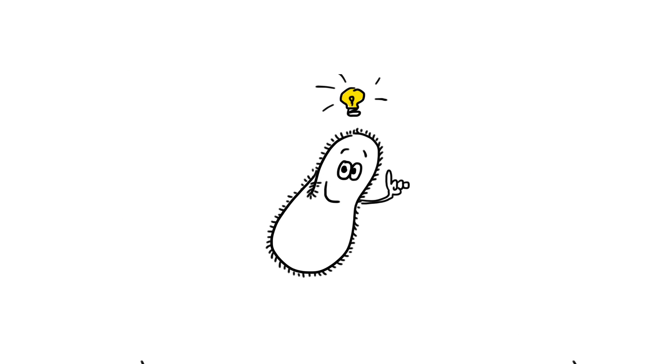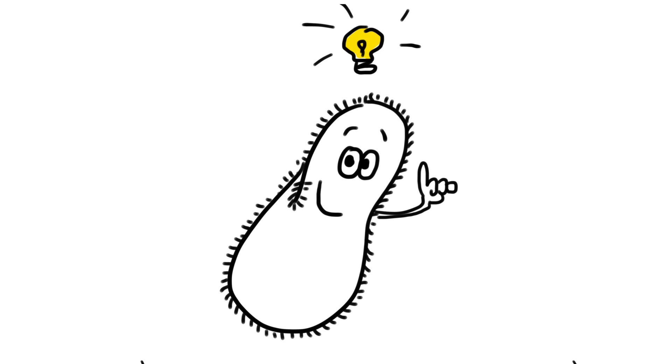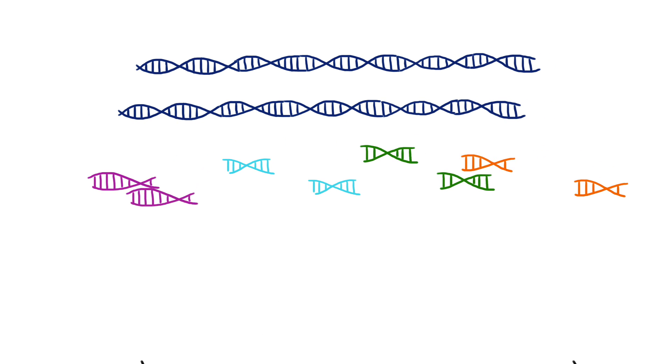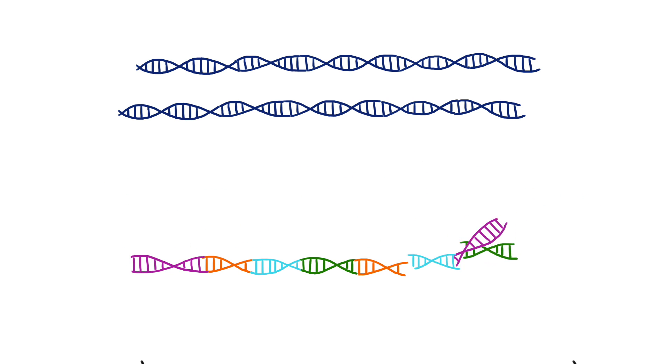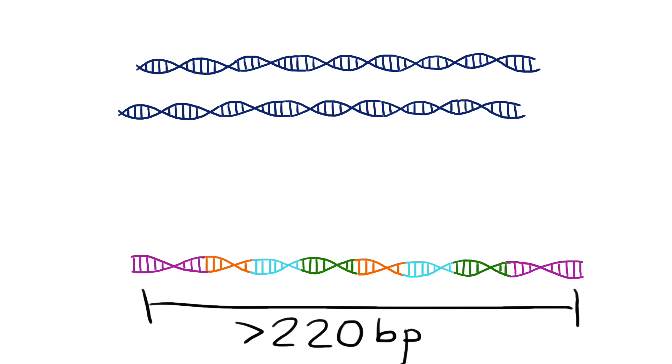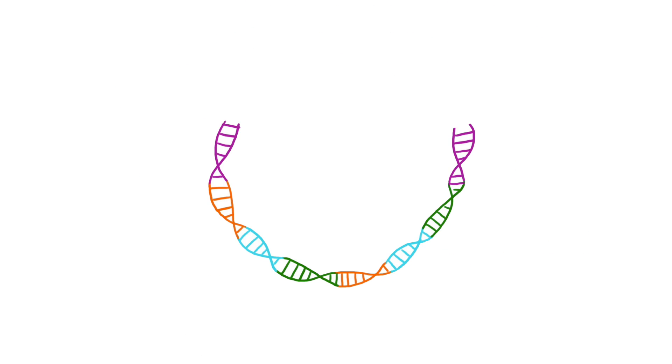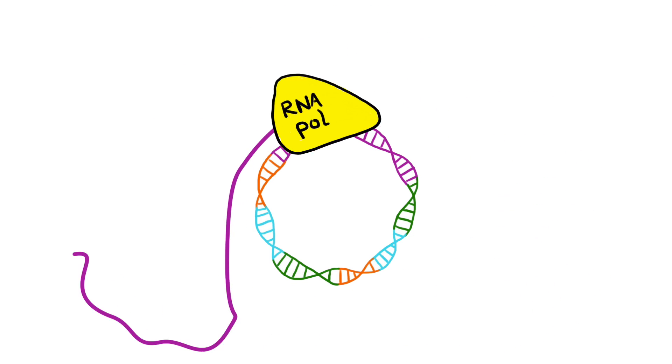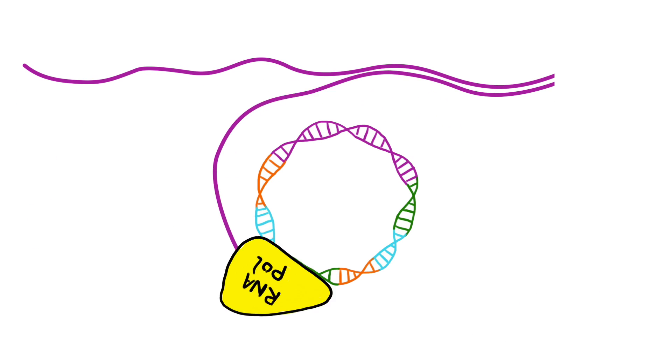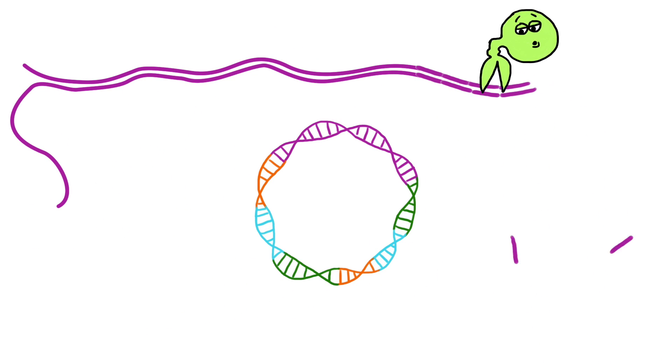We show that the cell overcomes this problem through a remarkable mechanism. Upon excision, IESs are stitched together end-on-end in a random order, forming long chains of DNA segments. These chains are then circularized. Circular DNA can be transcribed continuously, forming many small RNAs from each excised DNA segment.